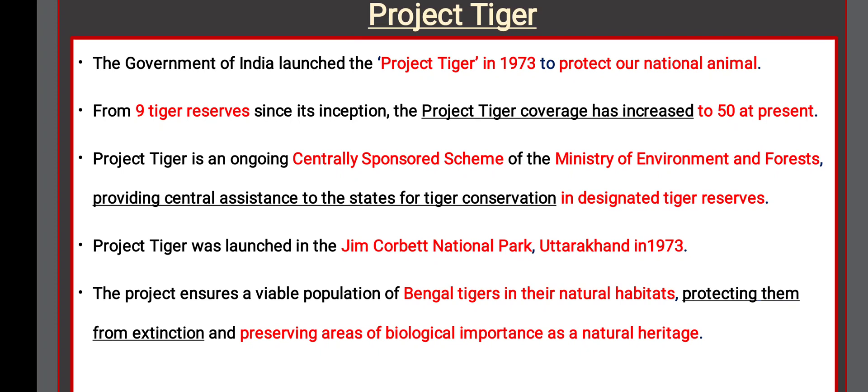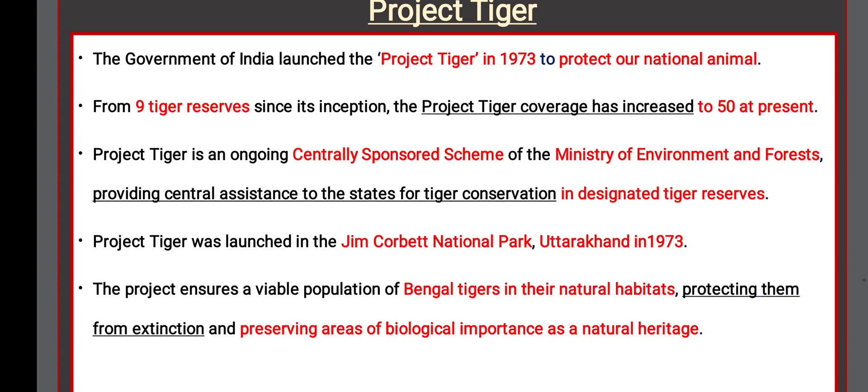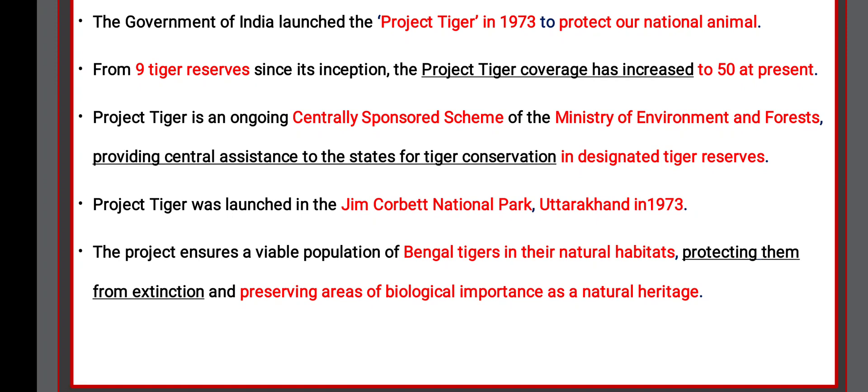Project Tiger: The Government of India launched Project Tiger in 1973 to protect our national animal, the tiger. Starting from 9 Tiger Reserves at inception, coverage has now increased to 50 reserves. It is an ongoing centrally sponsored scheme of the Ministry of Environment and Forest. The project was launched at Jim Corbett National Park, Uttarakhand, and ensures viable populations of Bengal tigers in their natural habitats, protecting them from extinction.